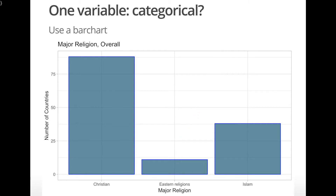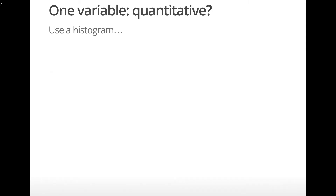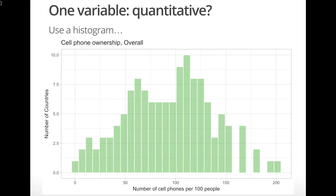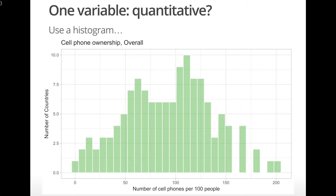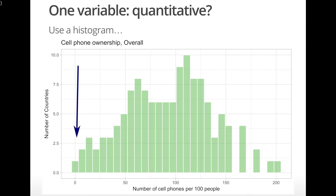Now suppose we wish to know the distribution of number of cell phones per 100 people. Here we have one variable and it's quantitative, so we can use a histogram. The distribution looks fairly symmetric and is centered around 100 — that is, in many countries, on average, most people own one cell phone. But there are a few countries where, on average, people own more than one cell phone, and also a few countries where some people don't own a phone at all.